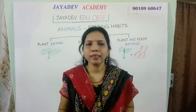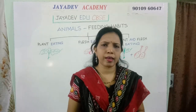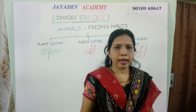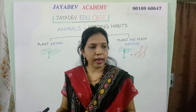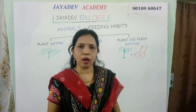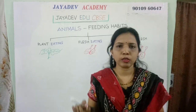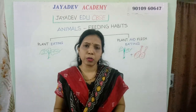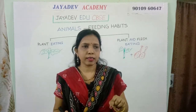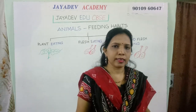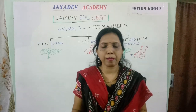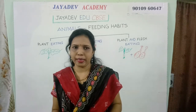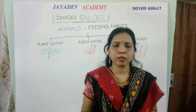Daily we see so many animals around us. Some of them are domestic animals and some are wild animals. And if you go to a zoo or a forest, there you find so many animals. Whenever you go to a zoo, what do you see there? Some of the animals may be eating other animals, some may be eating plants, some you find playing or some may be sleeping. So like this, we find different types of animals.